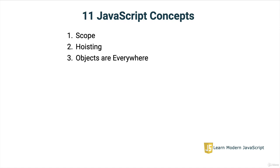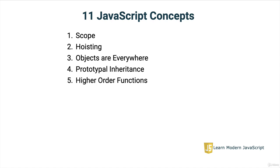Then we need to talk about the fact that objects in JavaScript are everywhere. They're a big part of JavaScript and you need to understand that in order to be effective. After that, we'll jump into prototypal inheritance — understanding how inheritance and how objects share properties and methods in JavaScript is critical. From there, we'll go to higher-order functions, a concept that makes many things we do in JavaScript possible.